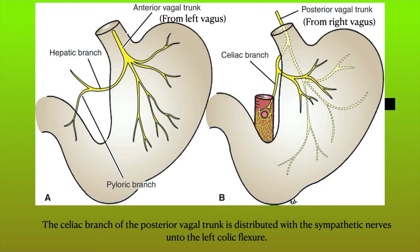The nerve supply. The anterior vagal trunk is anterior to the stomach and it arises from the left vagus, giving a hepatic branch which later gives a pyloric branch for the pylorus. The posterior vagal trunk is from the right vagus and gives a celiac branch which has sympathetic innervation from the celiac plexus as well.